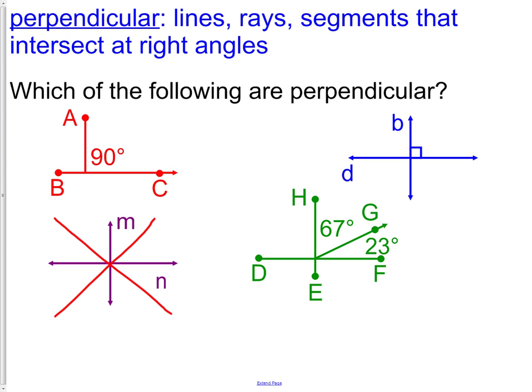Lastly, in the green example, we do have perpendicular. If you add 67 and 23, you would get 90. 90 degrees is our right angle, so we do have perpendicular segments in that picture.